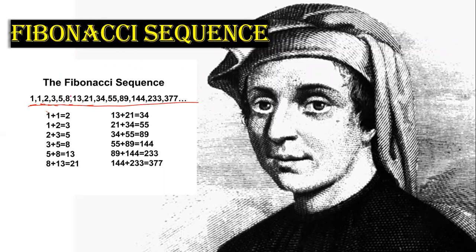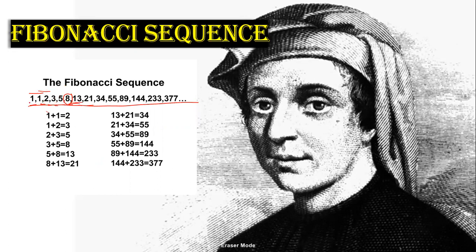Here we get the next number by adding the previous two numbers. We get 2 by adding 1 plus 1. We get 3 by adding 1 plus 2. We get 5 by adding 2 plus 3. In this way we get 21 by adding 8 plus 13. This number sequence is called the Fibonacci sequence.